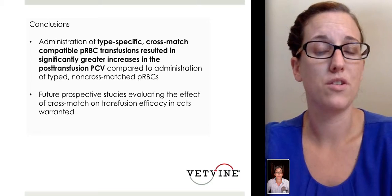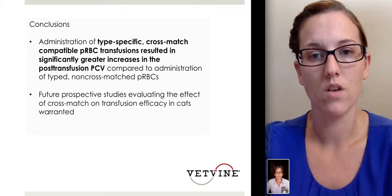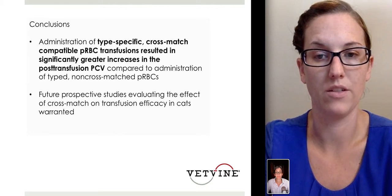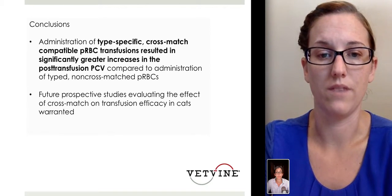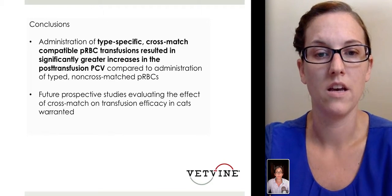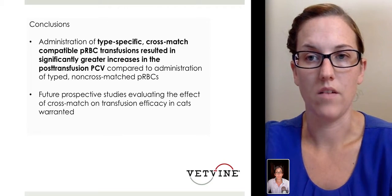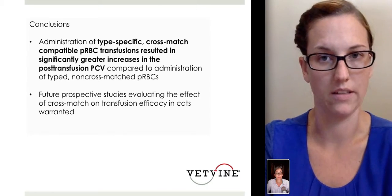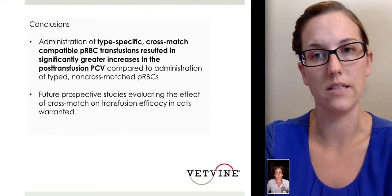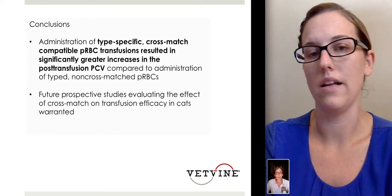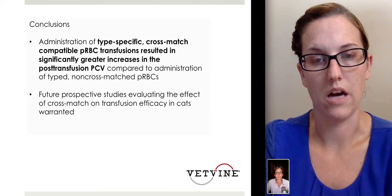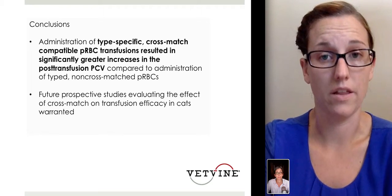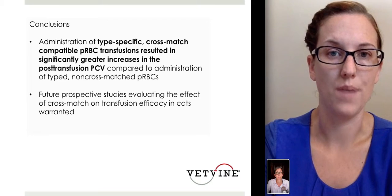The study concluded that administration of a type-specific as well as cross-match compatible red blood cell transfusion resulted in a significantly greater increase in post-transfusion PCV compared to those cats that did not receive a cross-match. Future prospective studies are needed to evaluate the effect of cross-match on transfusion efficacy in cats. The clinical takeaway is that some cats needing more than one transfusion will already be cross-matched on the second transfusion, but we're now recommending cross-matching on the first transfusion — partly because we still don't have a mechanism for detecting the MYC antigen, and there may be other undiscovered antigens beyond type A and type B alloantibodies.